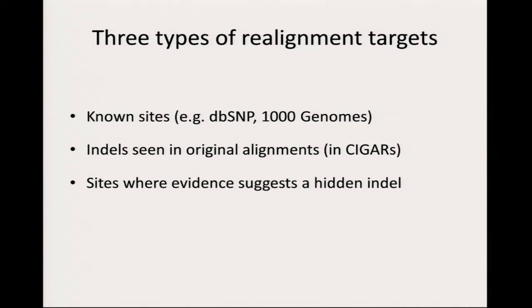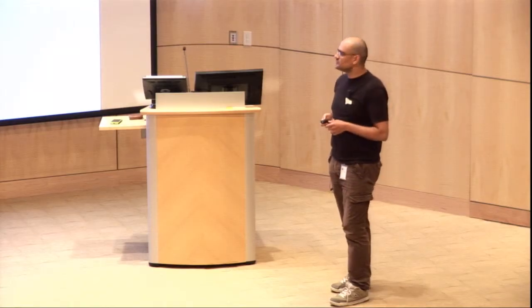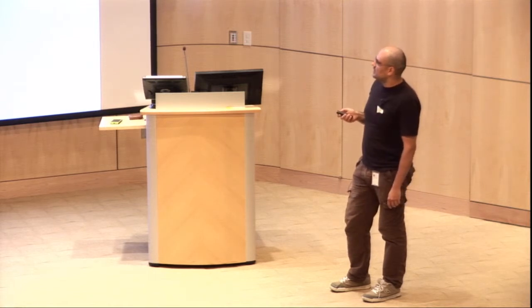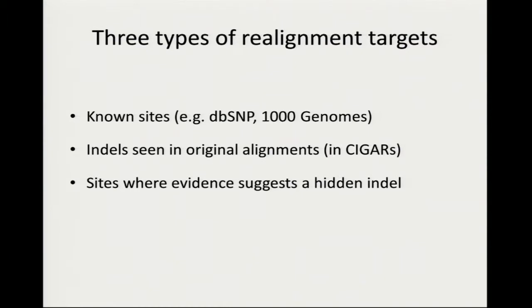You may already know about indel positions from databases or previous experiments, like the Thousand Genomes project. There are already positions where you expect to see indels that the mappers don't know about — you can add that information later in the indel realigner. Also, some reads may already have indels properly mapped when the indel falls toward the beginning of the read, but not all of them, so you want to solve the problem for the others.